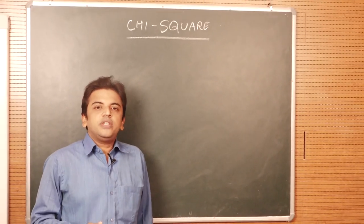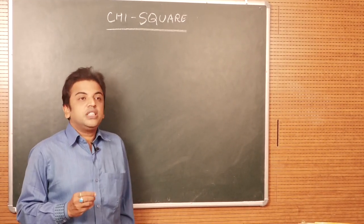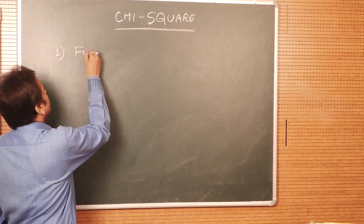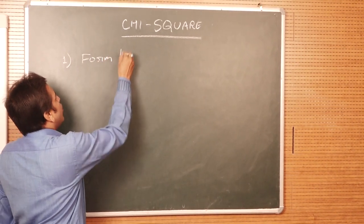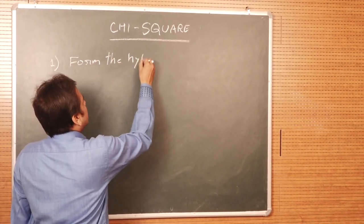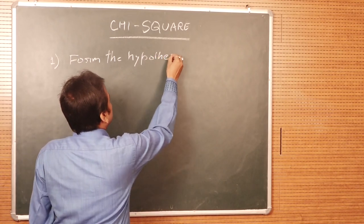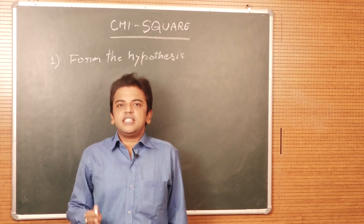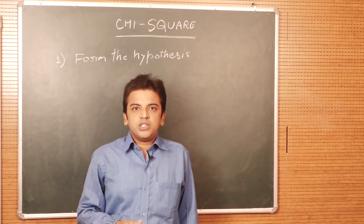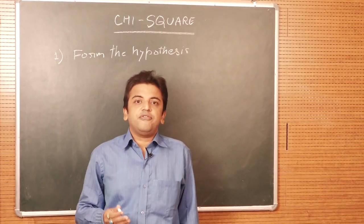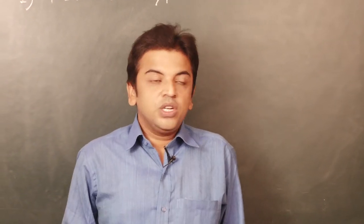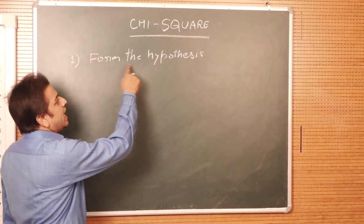When we have to calculate the Chi-square, there are three steps. The first one is that we have to form the hypothesis. Hypothesis is the lightest statement where we have to discuss about the problem — what is the problem we are going to test.